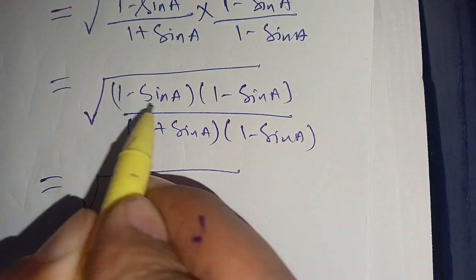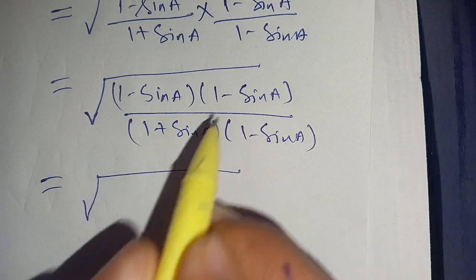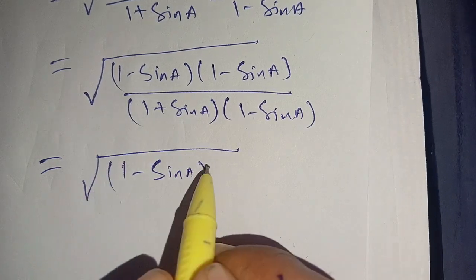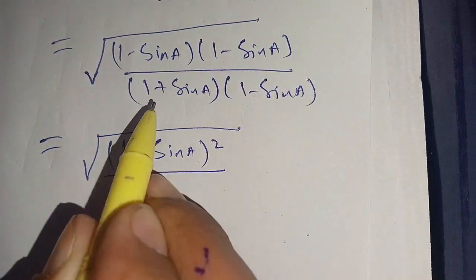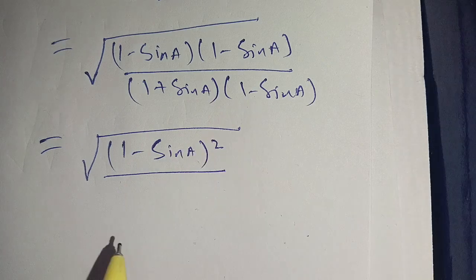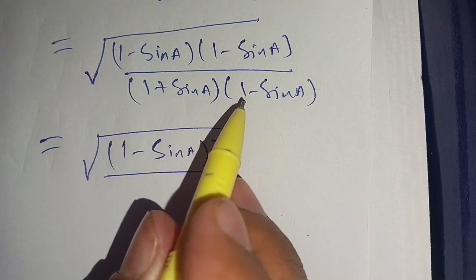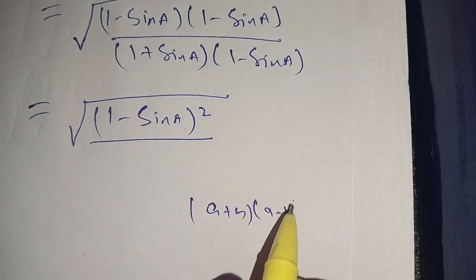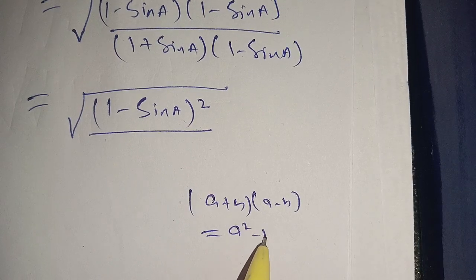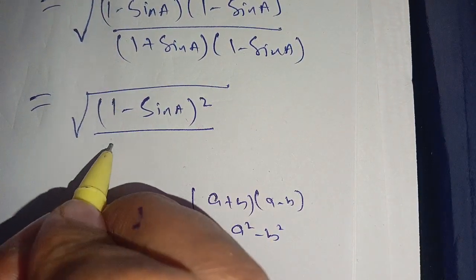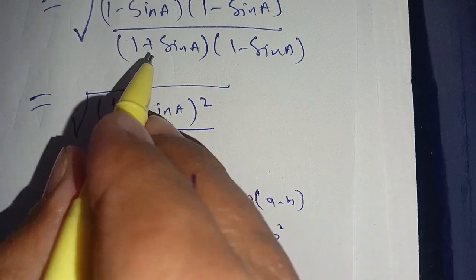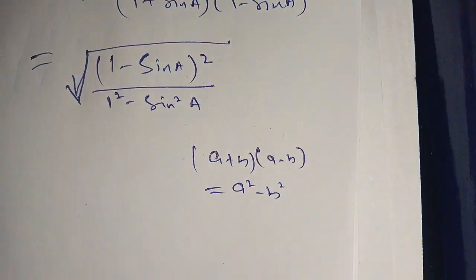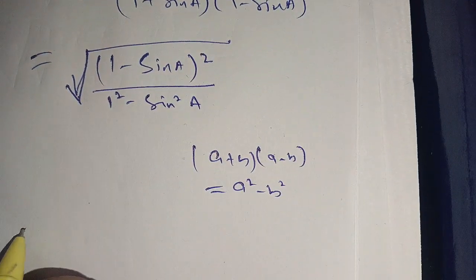We can write the numerator as (1 minus sine of a) whole square, divided by (1 plus sine of a)(1 minus sine of a). The denominator is in the form of (a plus b)(a minus b), which equals a squared minus b squared. Here a is 1, so a squared is 1, and b squared is sine squared a.